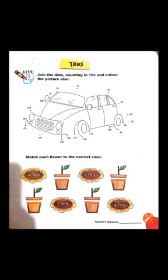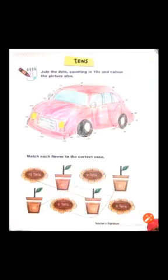10 tens means 100 — you will match 10 tens to the 100 vase. اس کے بعد ہے 40 — 40 means 4 tens. آپ نے 40 vase کو 4 tens flower کے ساتھ match کرنا ہے۔ اس کے بعد 9 tens — each bundle has 10 pens, 9 tens is called 90. Nine tens flower کو آپ 9 vase کے ساتھ match کریں۔ Last one is 60 — it means 6 tens. آپ نے 60 vase کو 6 tens flower کے ساتھ match کرنا ہے۔